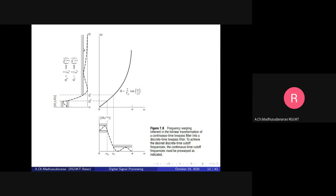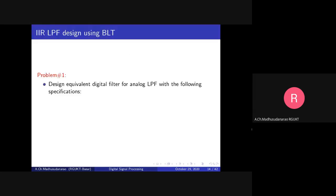We try to go for pre-warping to avoid the warping effect introduced by bilinear transformation — we try to cancel that warping effect. This is called anti-warping or pre-warping. Now, Problem Number One: IIR low pass filter design using bilinear transformation.